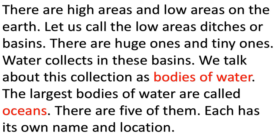There are high areas and low areas on the earth. Let us call the low areas ditches or basins. There are huge ones and tiny ones. Water collects in these basins. We talk about this collection as bodies of water. The largest bodies of water are called oceans. There are five of them.